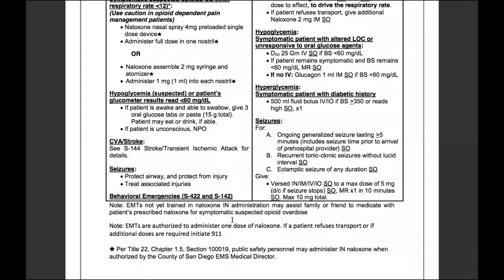Some notes: an EMT not yet trained in naloxone intranasal administration may assist a family member or friend to medicate with the patient's prescribed naloxone for symptomatic suspected opioid overdose. These prescribed naloxone preloads are common with people who have serious opioid dependency or are on pain management and accidentally overdose. EMTs are authorized to administer one dose of naloxone; if the patient refuses transport or additional doses are required, initiate 9-1-1 — basically, you need ALS.